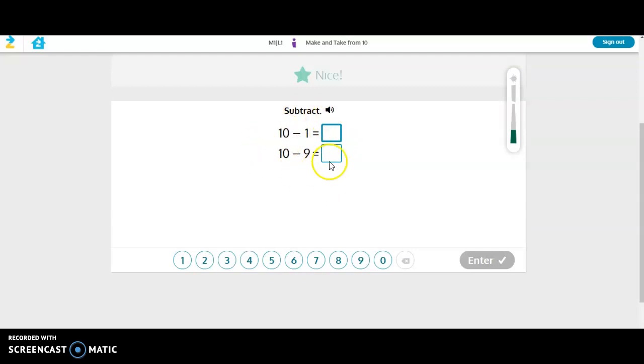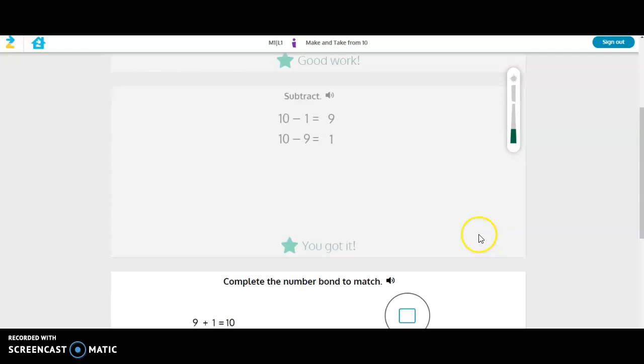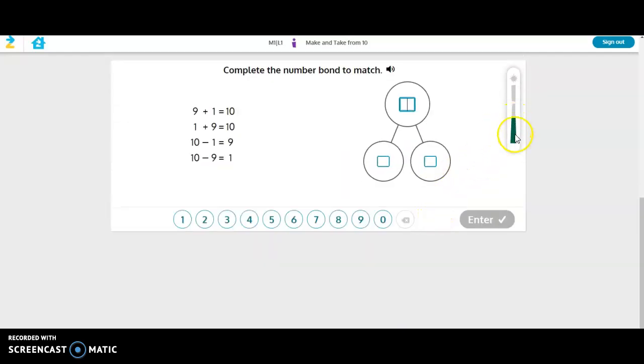As you answer the problems correctly you'll notice that the tower on the right side eventually fills up. So watch how I do this one. 10 minus 1 is 9. 10 minus 9 is 1. And then when I hit enter and I click next you'll see it goes to the next problem and my tower is going up. So continue to do this.